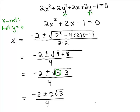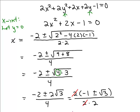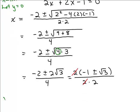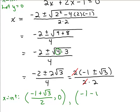We can simplify further by factoring a 2 out of the numerator: 2 times quantity negative 1 plus or minus square root of 3, over 2 times 2 — the 2s cancel. So x is either negative 1 plus square root of 3 over 2, or negative 1 minus square root of 3 over 2. Our x-intercepts are therefore the points (negative 1 plus square root of 3 over 2, 0) and (negative 1 minus square root of 3 over 2, 0).